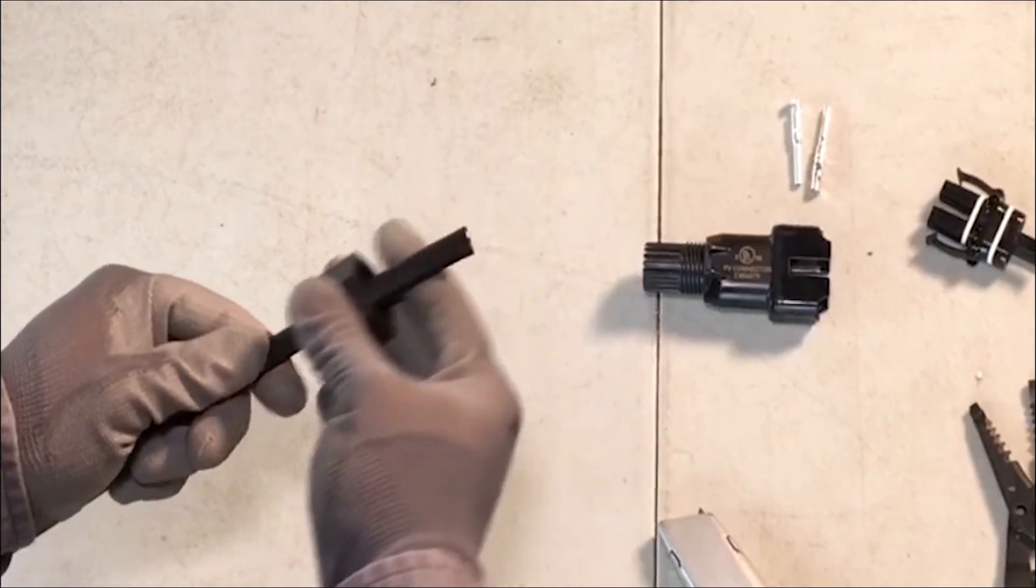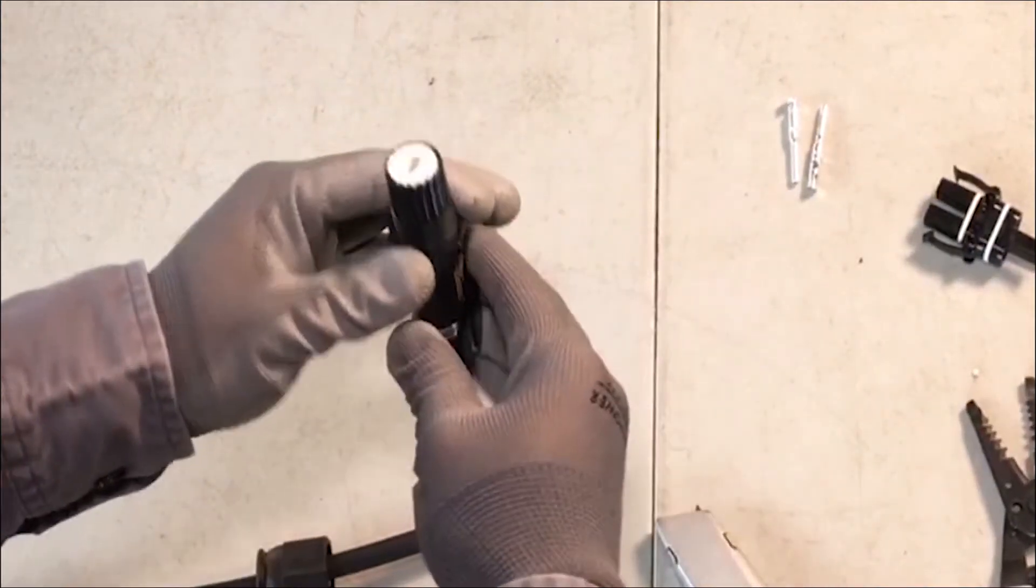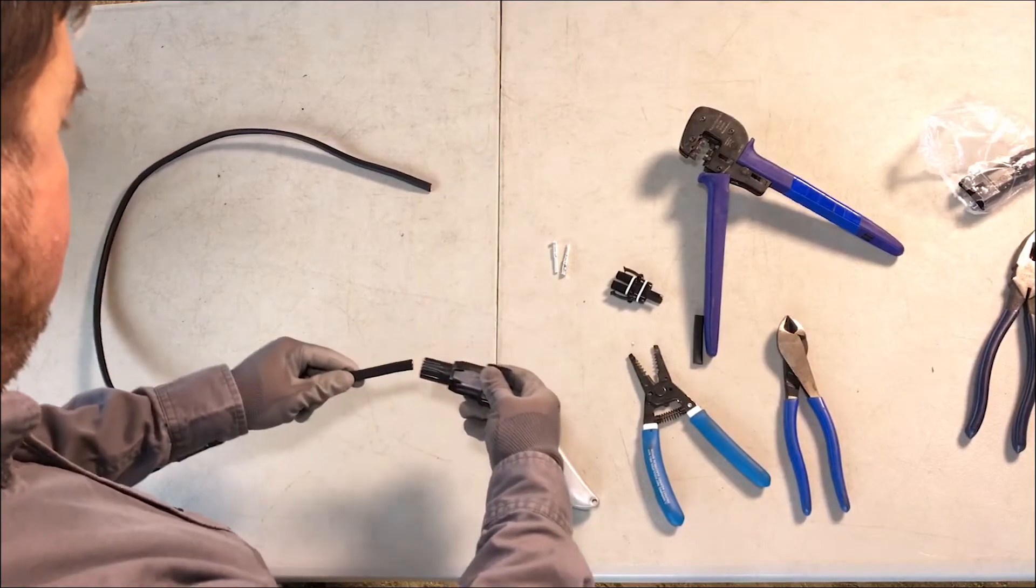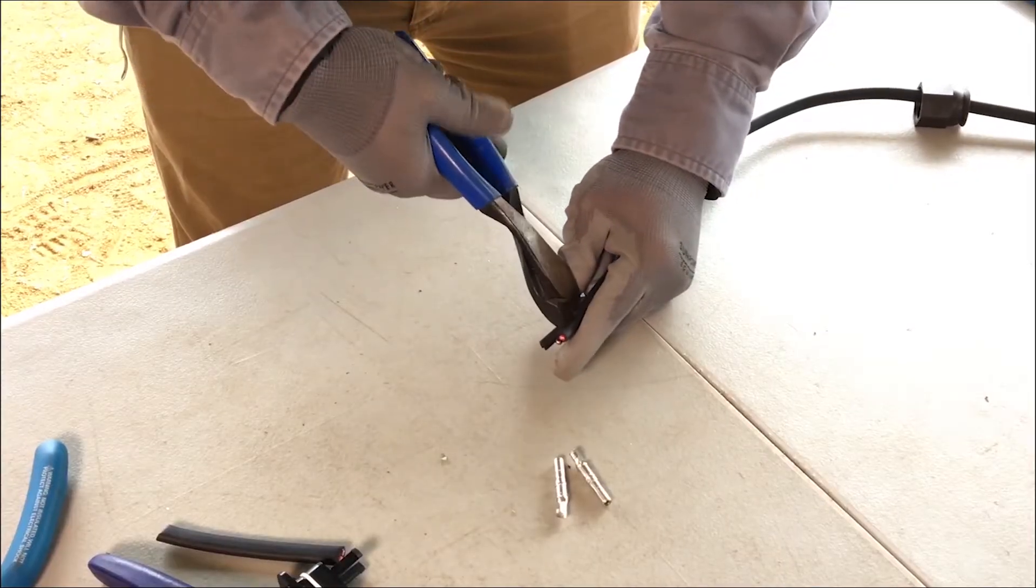Slide the connector nut from the connector over the cable with its threads facing the cut end of the cable. Then, ensuring the pre-installed gasket is in place, slide the connector cover over the cable with its large opening toward the cut end of the cable.